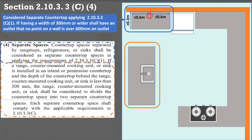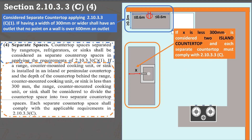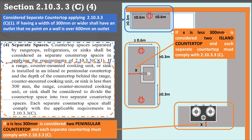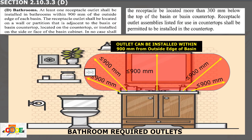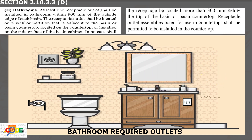If an island countertop is separated by a range, counter-mounted cooking unit, or sink, and if X is less than 300 mm, this is considered a two-island countertop and must comply with 2.10.3.3C — any island countertop 600 mm or more on one side and 300 mm or more on the other side requires a receptacle outlet. Similarly, for peninsular countertops, if X is less than 300 mm, it is considered two peninsular countertops and must comply with 2.10.3.3C. Required outlets in bathrooms shall be within 900 mm of the outside edge of each basin, and shall not be located more than 300 mm below the top of the basin or basin countertop.